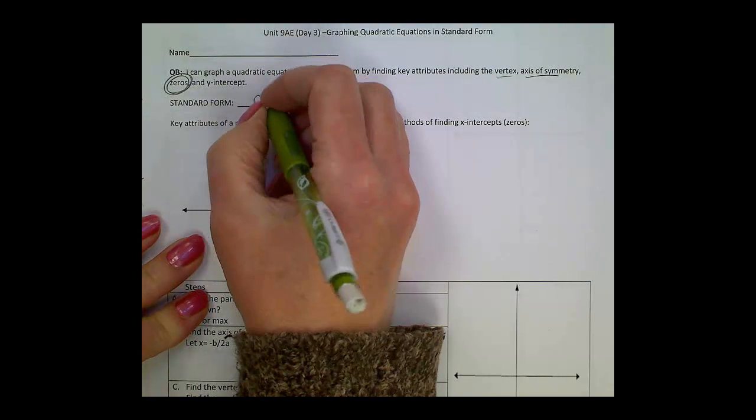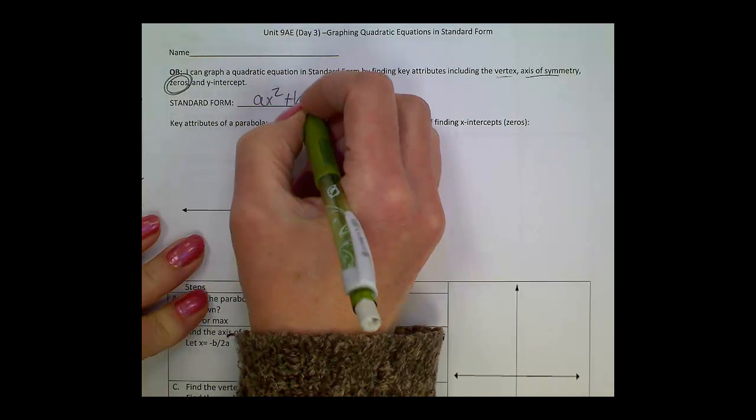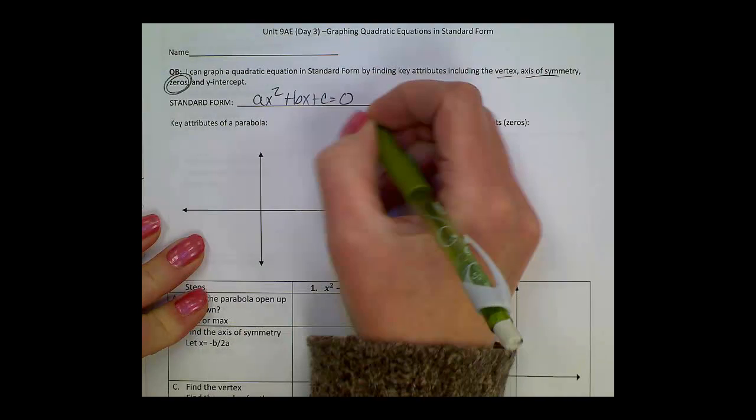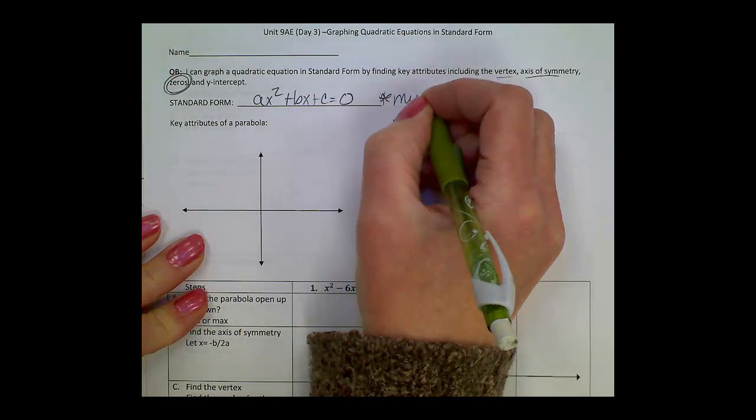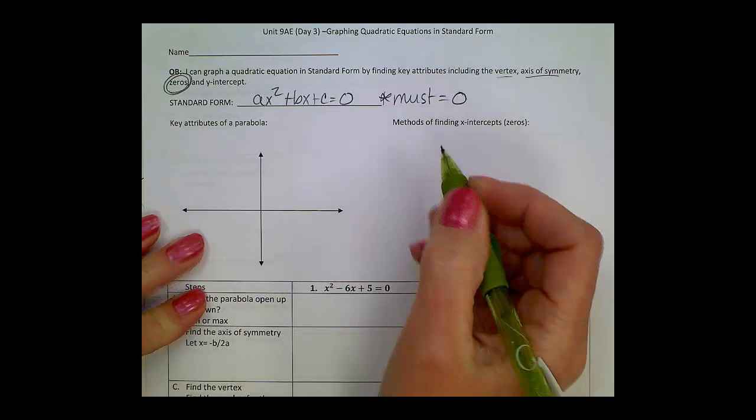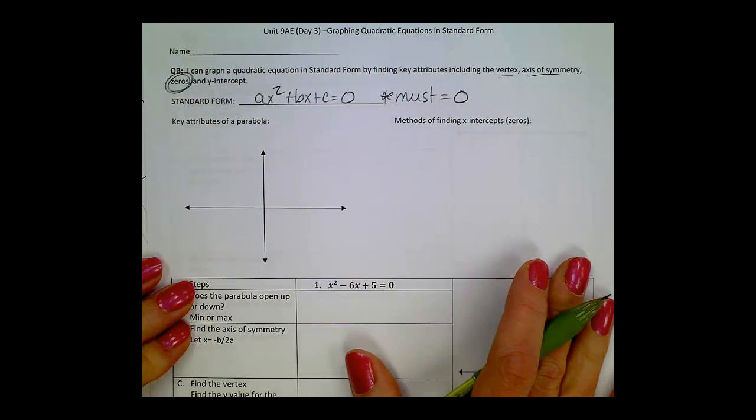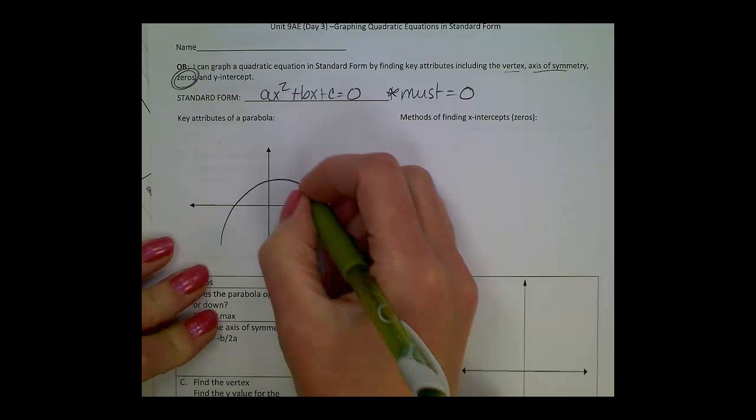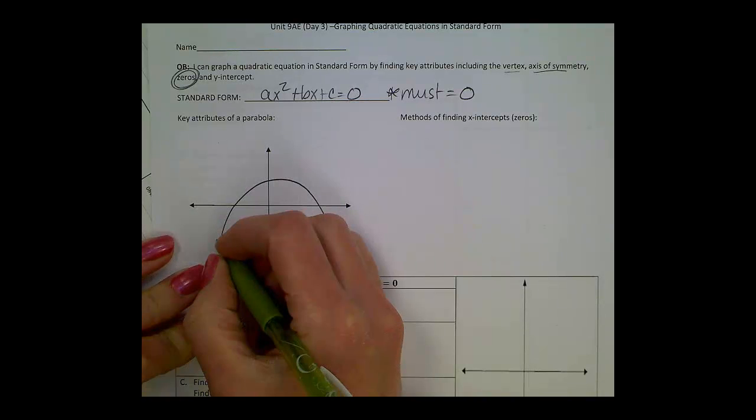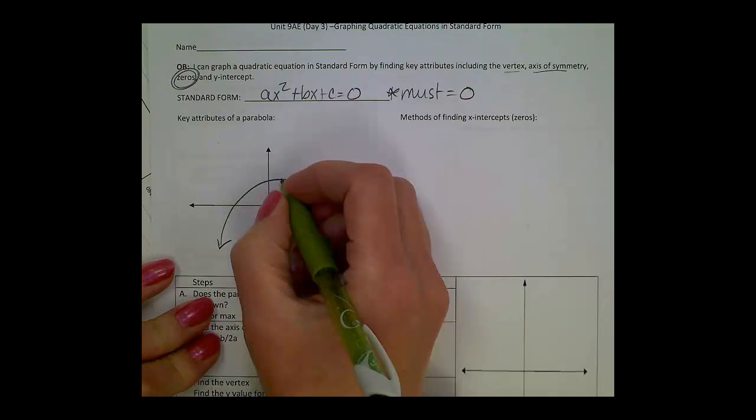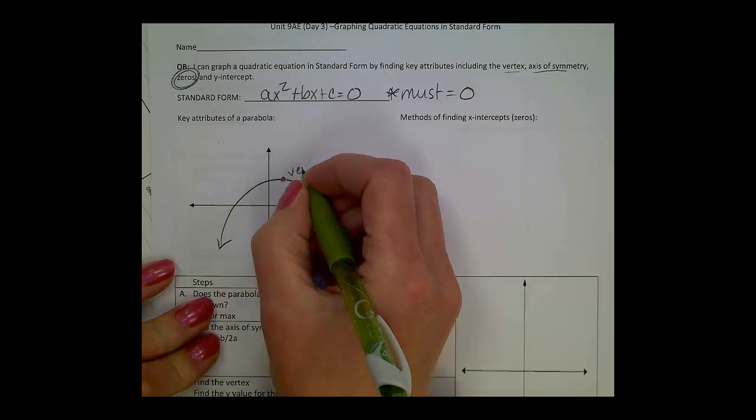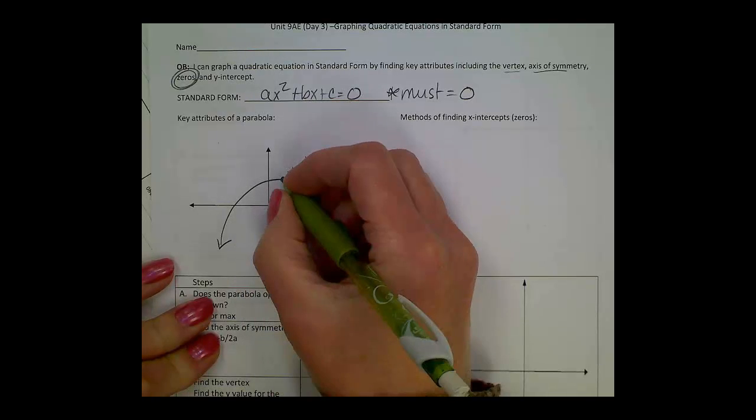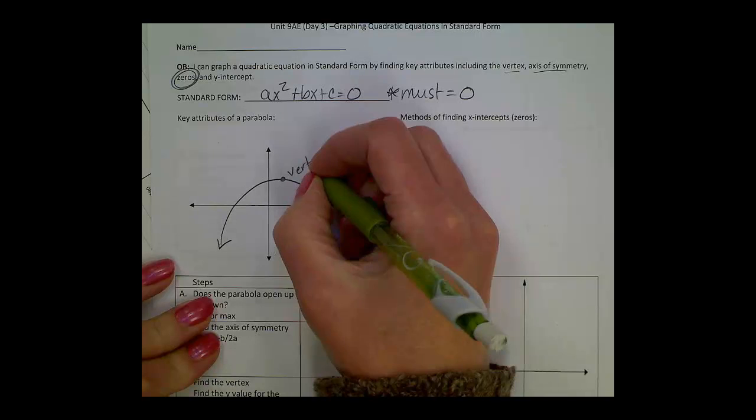Again, standard form is ax squared plus bx plus c equals zero. Equations must equal zero. For key attributes of a parabola when we're graphing, let's make one upside down today. This would be a negative x squared term with a vertex that would be a maximum because it's the high point of the graph.